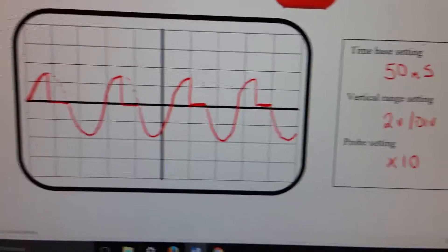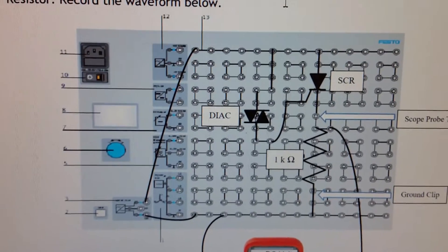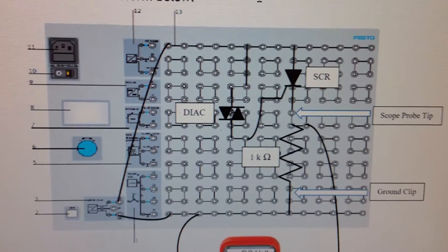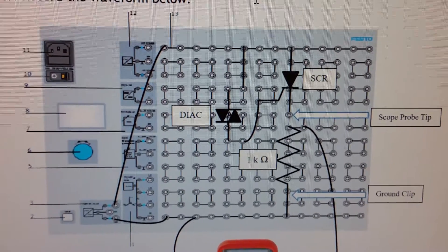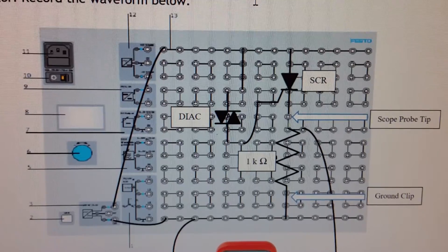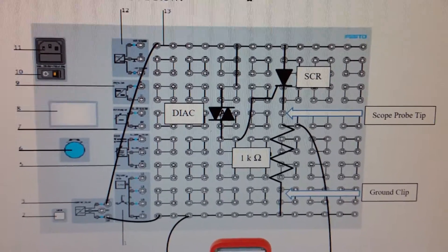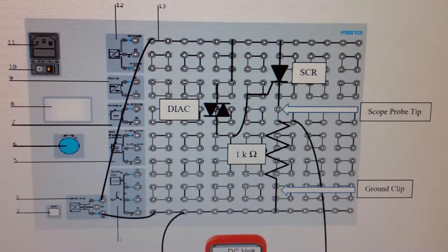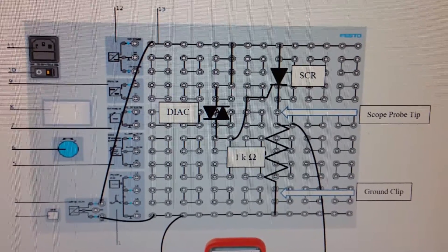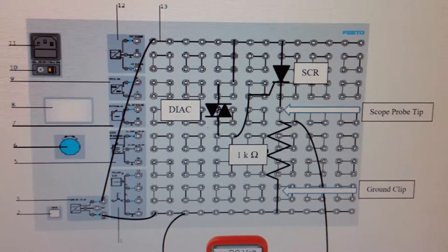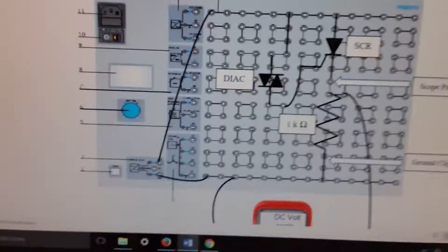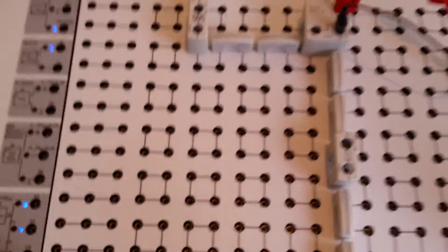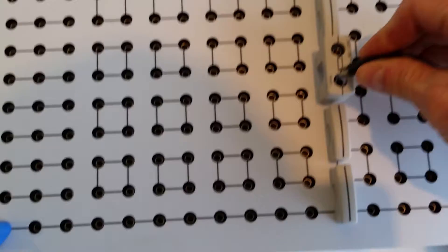Next we're going to look at the voltage across the load. We saw what was developing across the switch — I'm calling the SCR a switch because it's switching on, conducting, staying on, and allowing that voltage to go towards the load. In order to look at that waveform, we're now going to move our alligator clip down and move our scope probe to the top of the resistor.